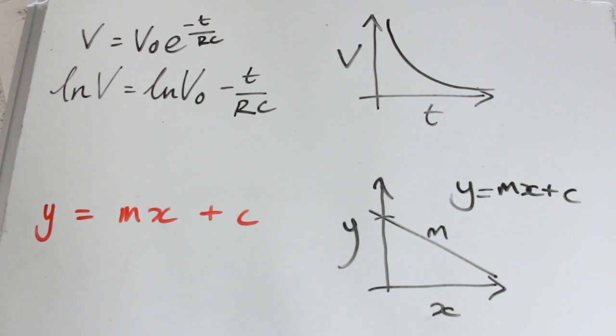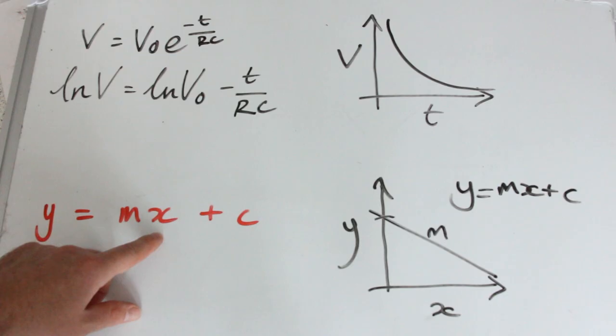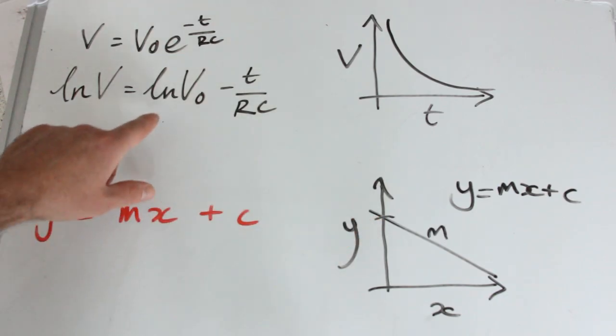Okay, we're going to have time on our X axis, so we want to move time to where the X is. And we're going to have an intercept up here, which is going to be the natural log of the initial voltage. And this is our Y value, so we can leave that where it is.